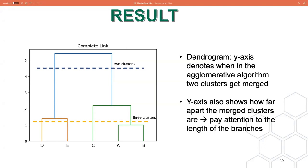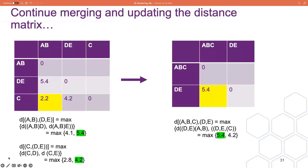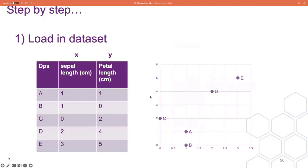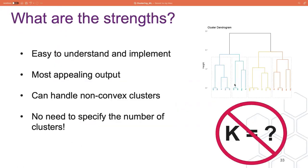The y-axis also shows how far apart the merged clusters are — the longer the branch, the further apart the merged clusters are. The longest branches in the diagram are marked by the blue dashed line labelled 'two clusters.' Because these are the longest branches, that indicates going from two clusters to one big cluster meant merging points that are pretty far apart. Going back, we can see that merging AB and C with D and E required merging some points that were pretty far apart from each other.